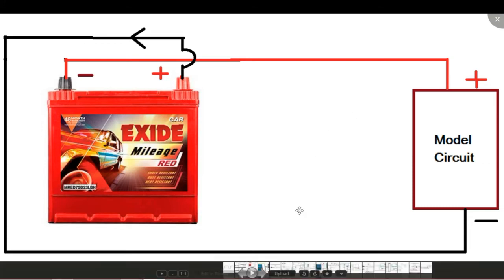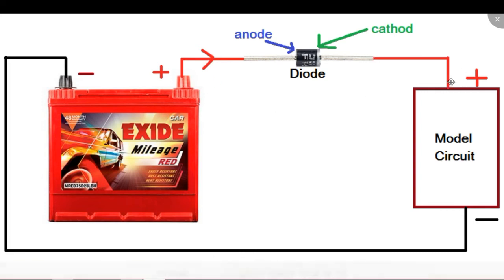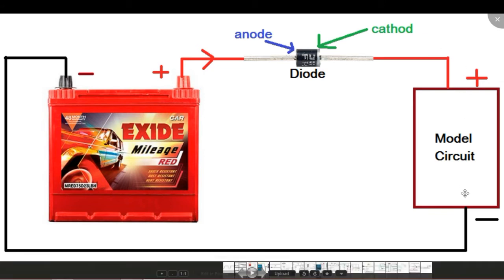Here we have the protection circuit diagram. You can see we are connecting a diode in between these two terminals. The positive terminal of the battery is connected to the positive terminal of the diode, and the negative terminal of the diode is connected to the positive terminal of our circuit. In this case the current will flow from the positive terminal of the battery to the positive terminal of our circuit through this diode.